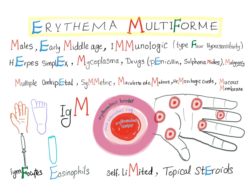The causes include infectious organisms — most importantly herpes simplex and mycoplasma. Drugs can also cause erythema multiforme, including penicillin and sulfonamides. Malignancy may also be associated with erythema multiforme.